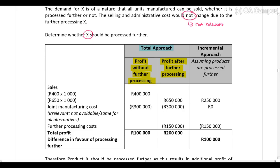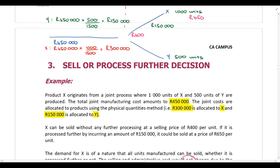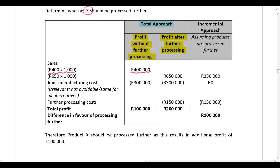Using the total approach — if Product X is sold at the split-off point, the selling price is 400 rand per unit for 1,000 units, giving sales of 400,000 rand. The only cost incurred is the joint cost allocated to X of 300,000 rand. There are no further processing costs. This results in a profit of 100,000 rand if sold at the split-off point.